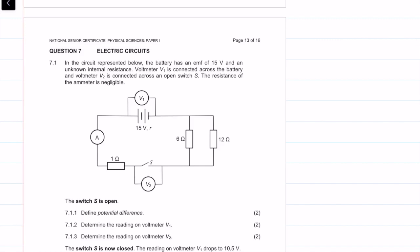In the circuit represented below, the battery has an EMF of 15 volts and an unknown internal resistance shown as R. V1 is connected across the battery and V2 is connected across an open switch. The resistance of the emitter is negligible.